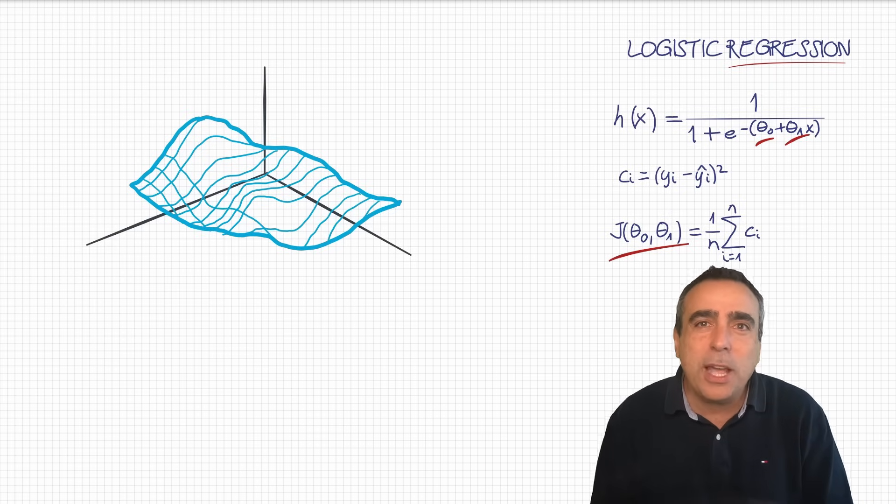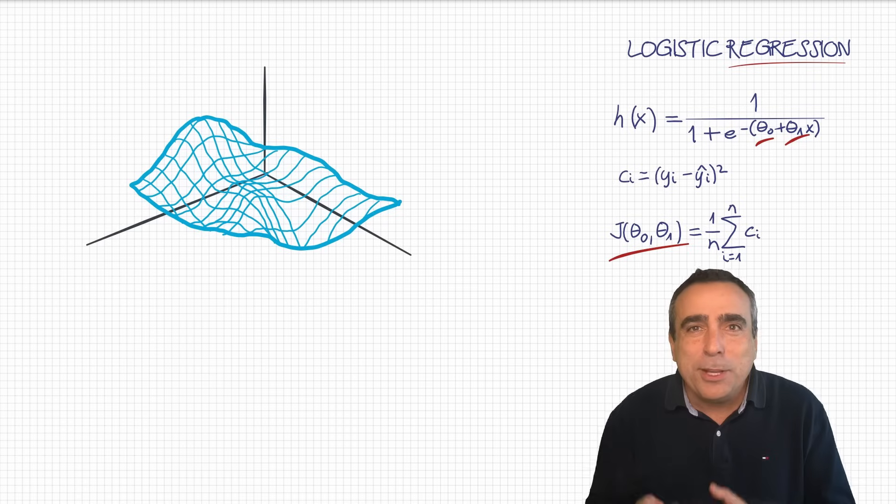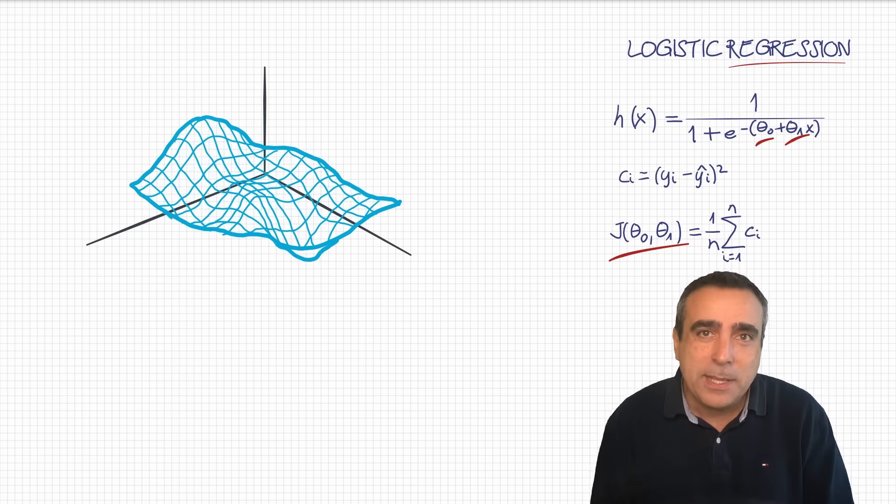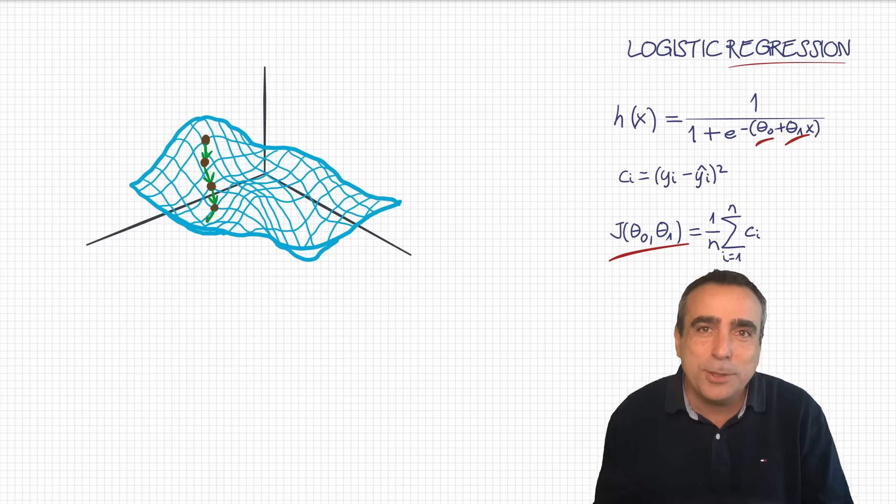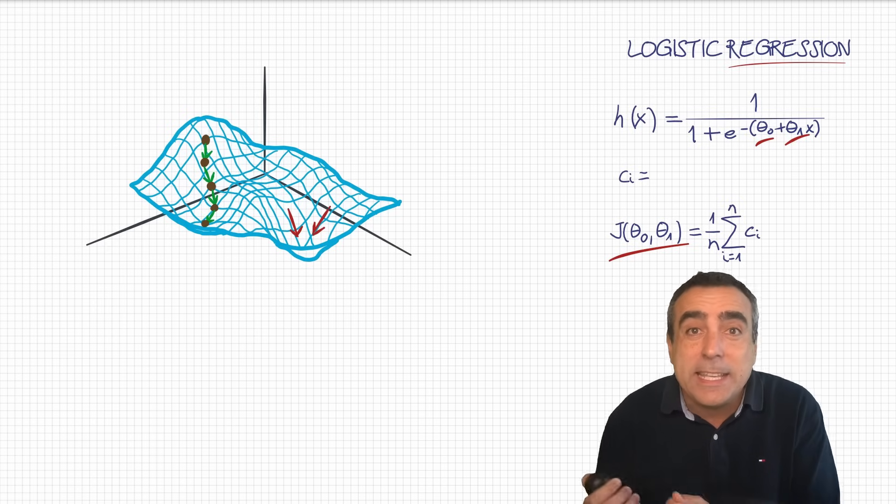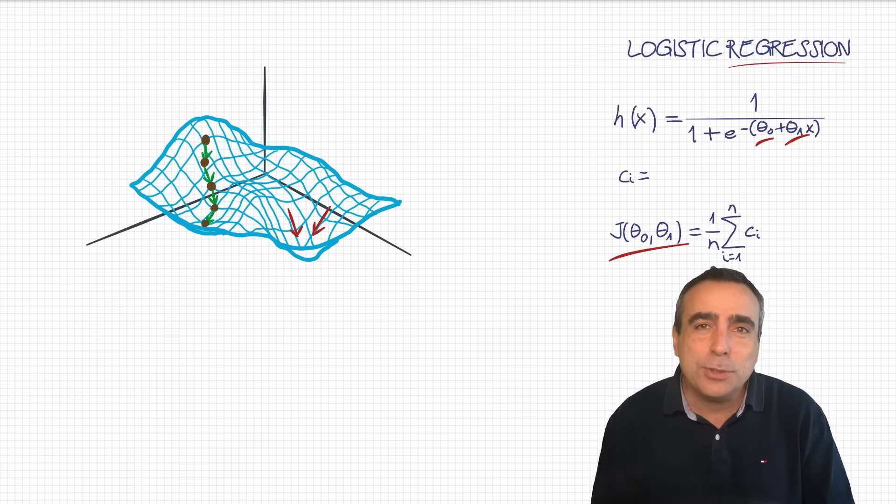If we define the cost function just like I just did, the shape of it is going to be more complex than the nice bowl of soup that we have for the linear regression. It's going to have several valleys instead, and that is going to be a big problem. Why? Because you can end in the wrong valley if you apply now the gradient descent algorithm. Imagine that you start here, and you move down the mountain using the gradient descent algorithm. So, first step, you can end here, then here, then here, and so on. So, oops, you see what happened? I ended in the wrong valley. I should have ended here, which is deeper. This problem is super common in machine learning, and it can give you a big headache.